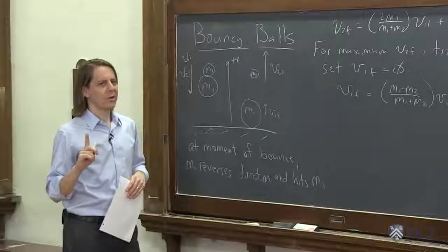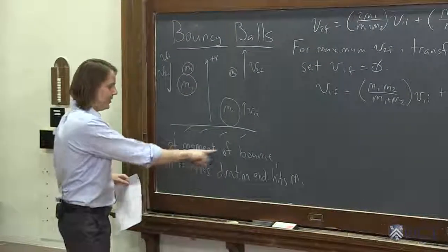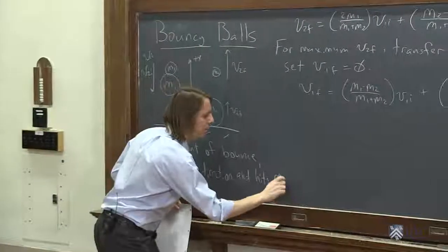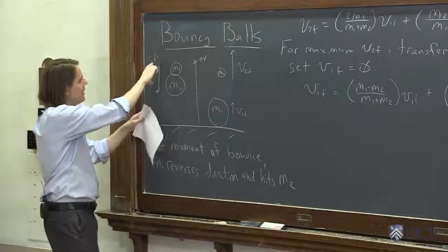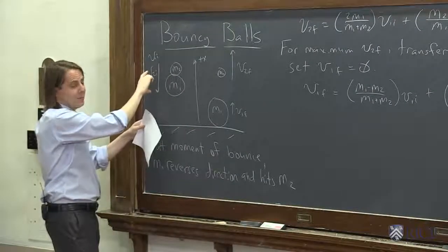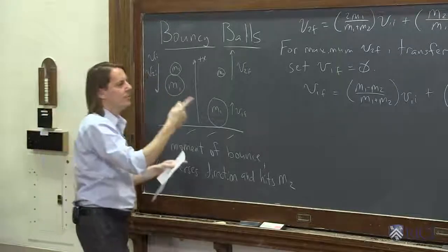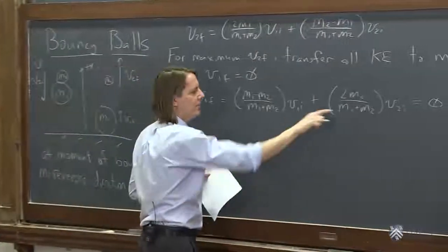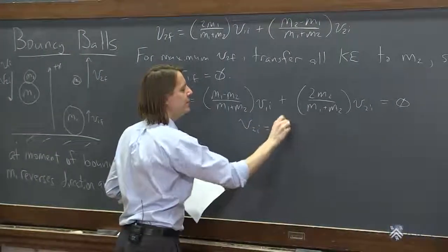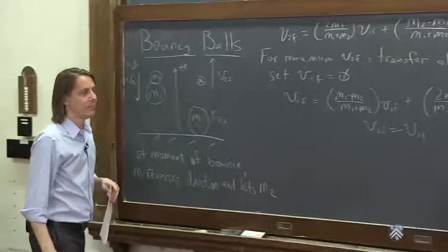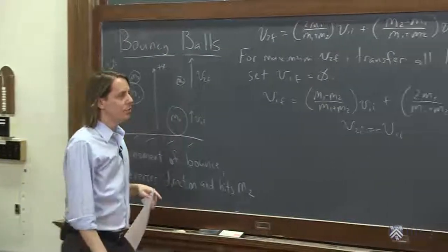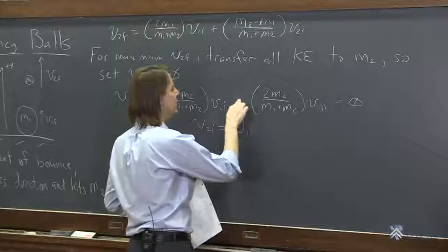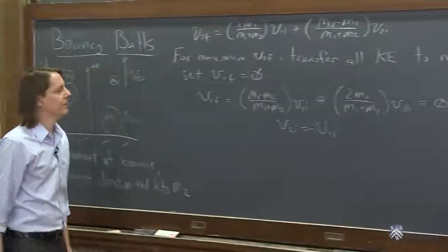And that doesn't get you too far except for one thing. Remember, at the moment of the bounce M1 reverses direction, it hits M2. So these speeds, right when they hit, they've built the same velocities, the same speeds from gravity, but then this one switches direction. So that really means that you could say V2i equals negative V1i. So let's take this V2i and say it's V1i and just make this negative.